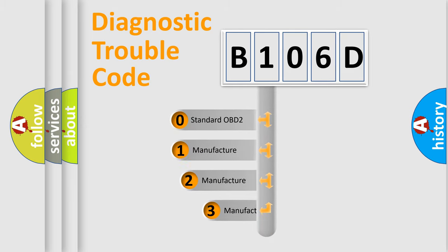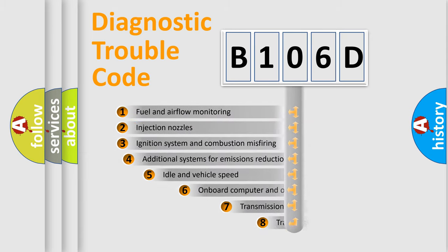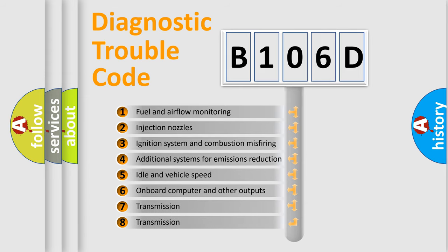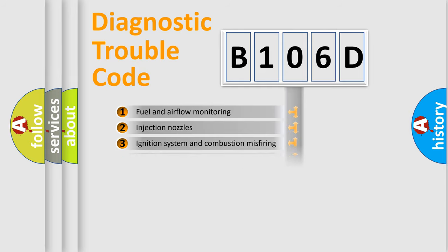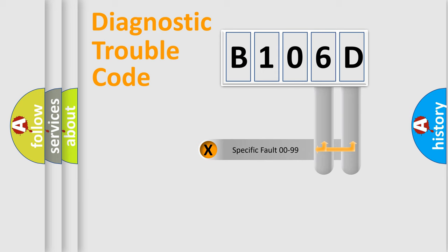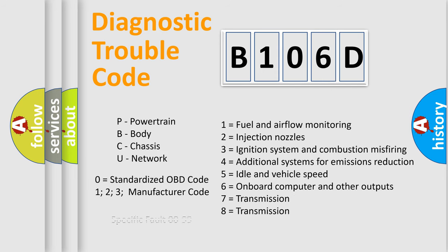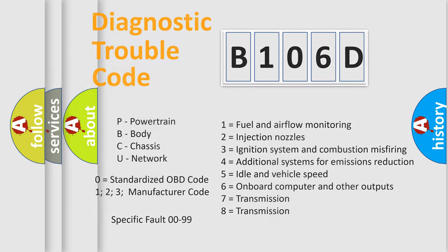If the second character is expressed as zero, it is a standardized error. In the case of numbers 1, 2, or 3, it is a more specific expression of a car-specific error. The third character specifies a subset of errors. This distribution is valid only for the standardized DTC code, and only the last two characters define the specific fault of the group. Such a division is valid only if the second character is expressed by the number zero.